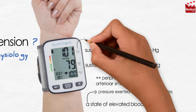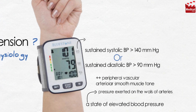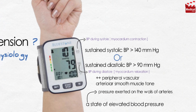Systolic blood pressure is the blood pressure during systole, or myocardium contraction, and diastolic blood pressure is the blood pressure during diastole, or myocardium relaxation.